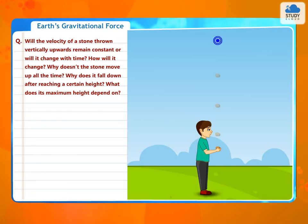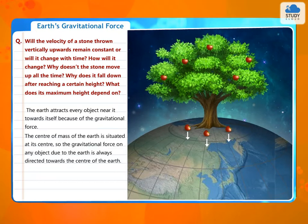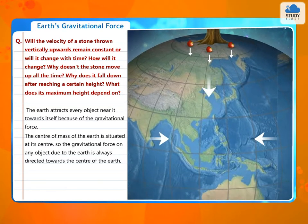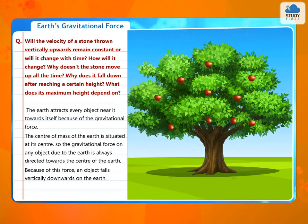What does its maximum height depend on? The Earth attracts every object near it towards itself because of the gravitational force. The center of mass of the Earth is situated at its center, so the gravitational force on any object due to the Earth is always directed towards the center of the Earth. Because of this force, an object falls vertically downwards on the Earth.